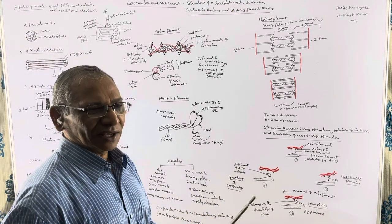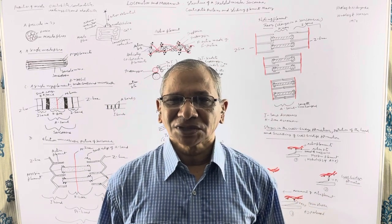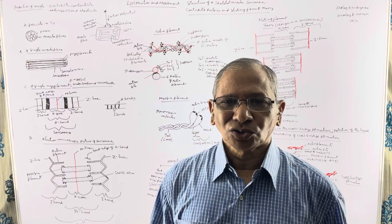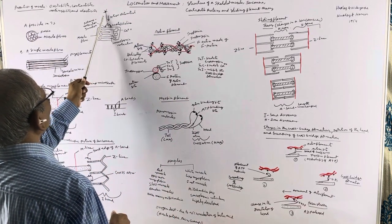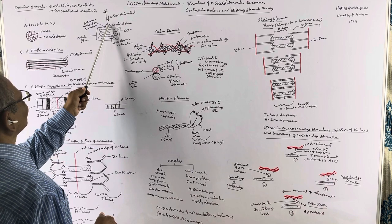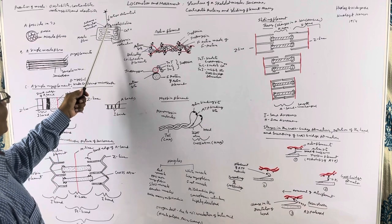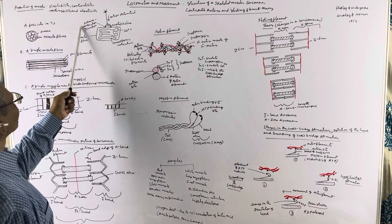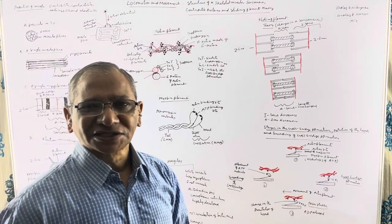On the surface of the muscle there are neuromuscular junctions or motor end plates. The axon terminals of a motor neuron lie on the surface of the muscle fiber, forming a neuromuscular junction. When action potentials arrive at the neuromuscular junction, the axon terminals release acetylcholine.